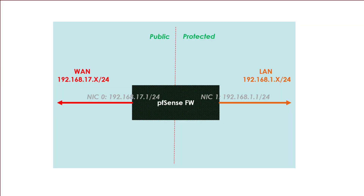Now, let's configure the WAN interface. Set its IP address to 192.168.17.1 /24 with a gateway IP of 192.168.17.1. Note that in real scenarios, WAN IP addresses would be assigned by DHCP or by your ISP.